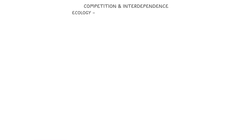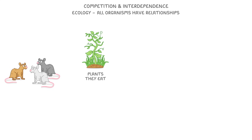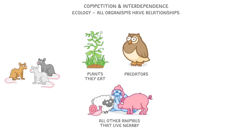The key thing to understand in ecology is that all organisms have relationships. For example, mice have relationships with other mice, with the plants that they eat, with the predators that eat them, and with all of the other animals that live nearby.